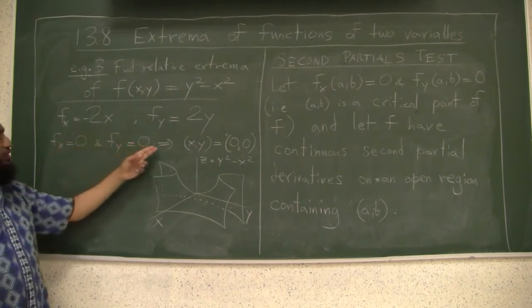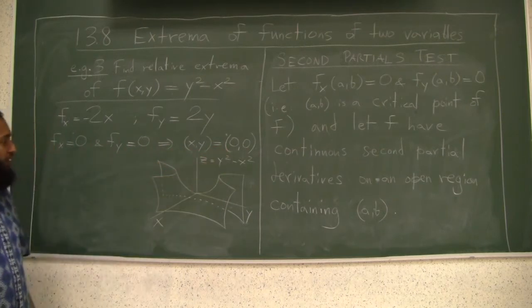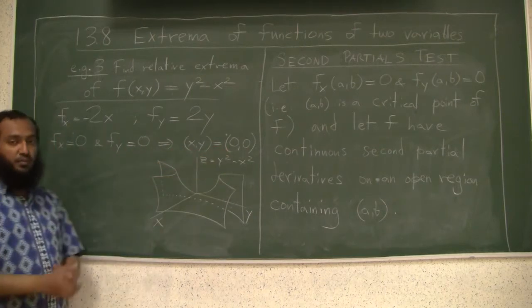Both of them are 0 can only happen when x, y is (0,0). How can we figure out if (0,0) is a local min or max?